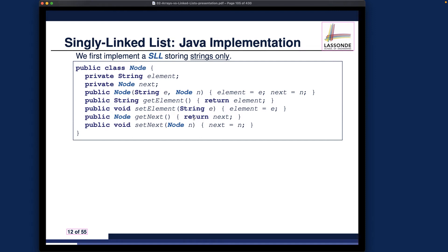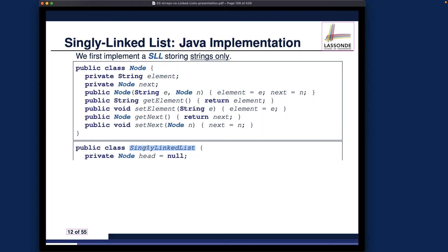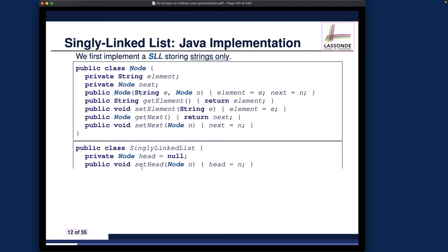The second class is the SinglyLinkedList. For now, it has just a single 'head' attribute — we are not including a tail reference yet because I want to first discuss the running time of the singly linked list without a tail reference. There is only this single head attribute, and we also have a setHead() mutator. The default constructor initializes all attributes to their default values.